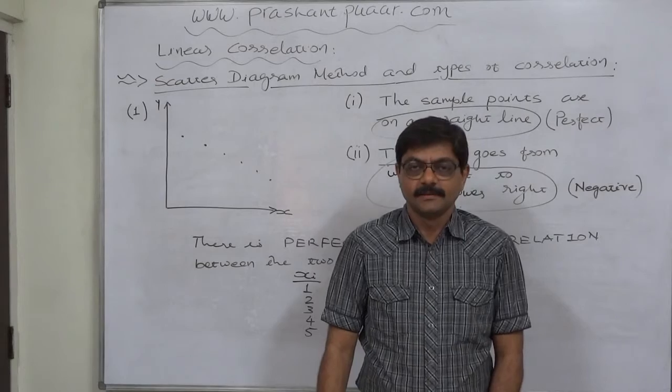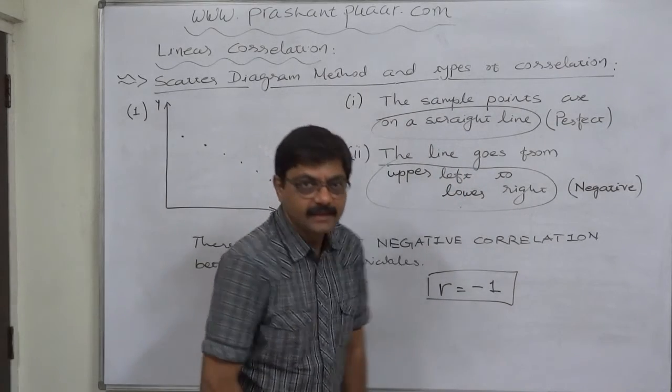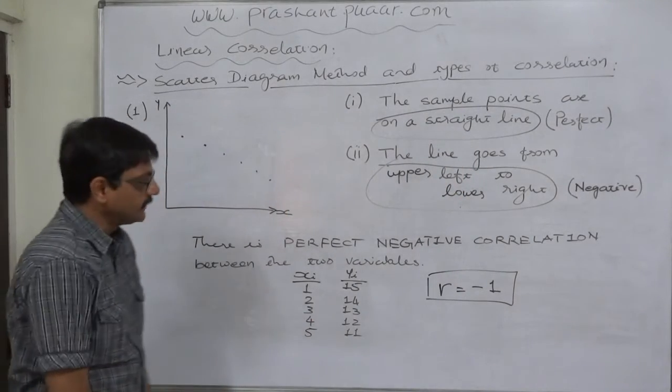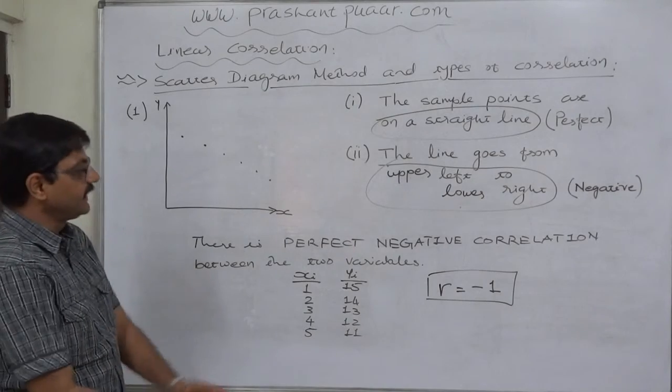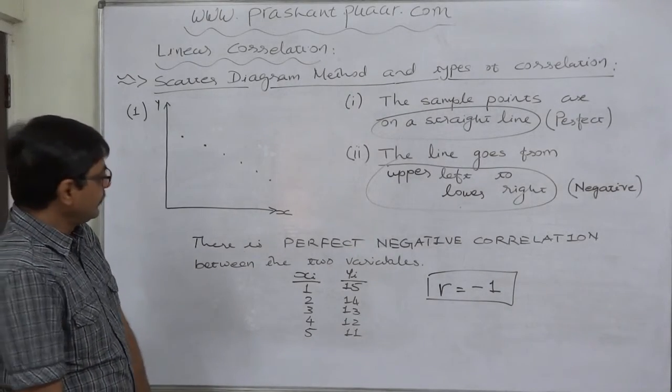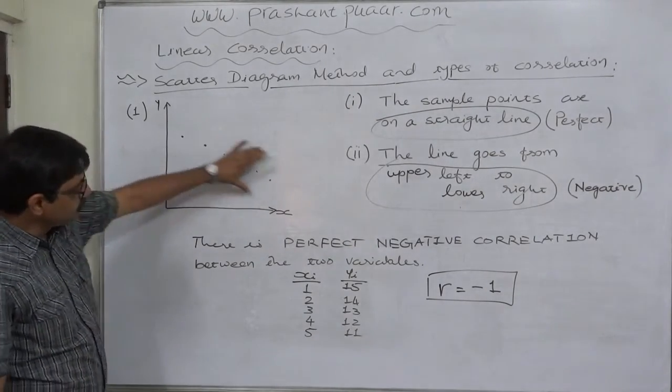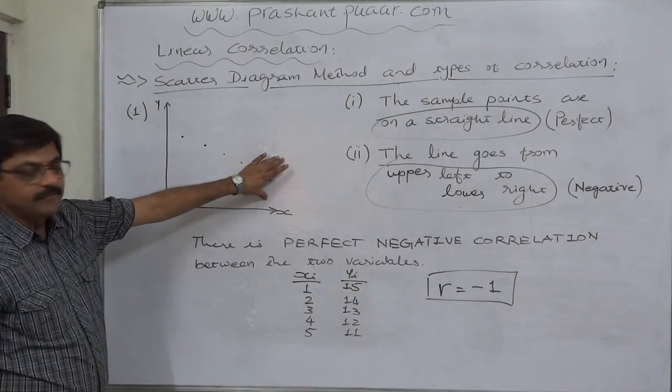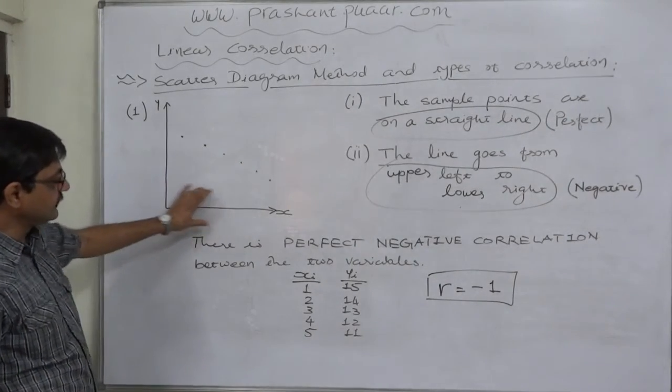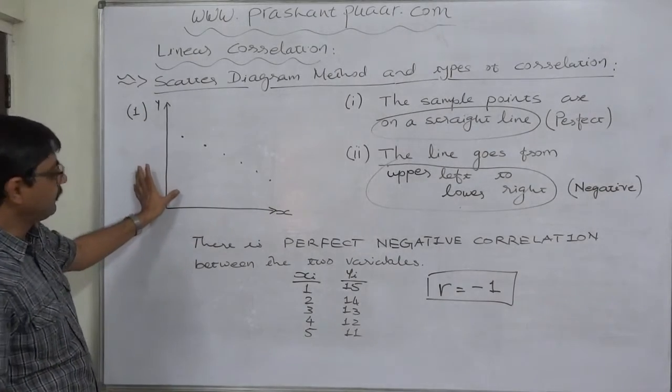Hello friends, namaste. Let us take another case of scatter diagram method. As usual, first take a graph paper and let us plot all the sample points on the graph paper after drawing the horizontal axis as the independent variable and the vertical axis as the dependent variable.